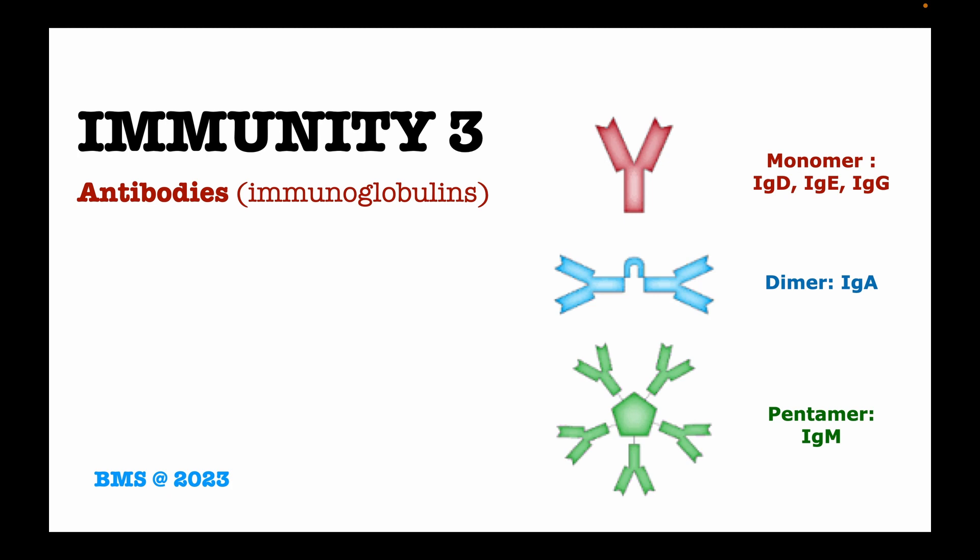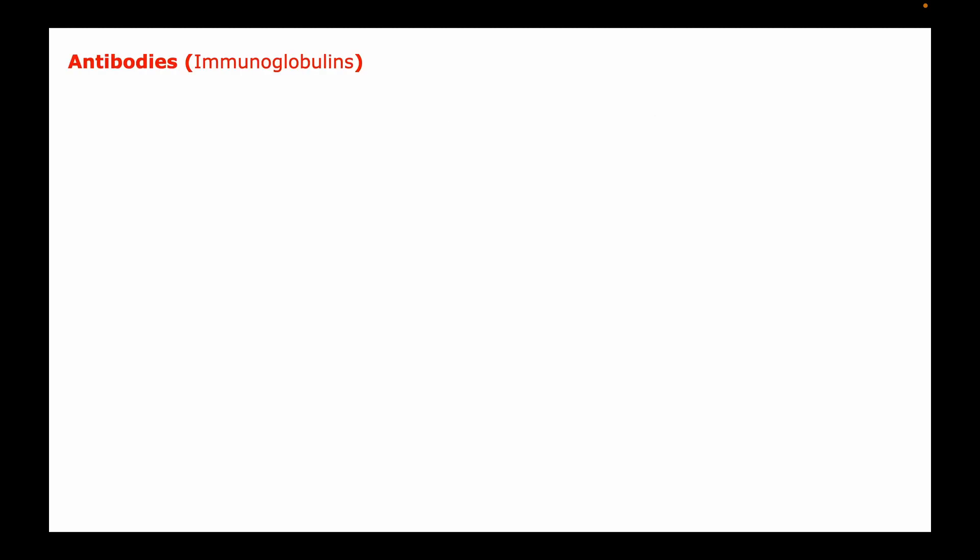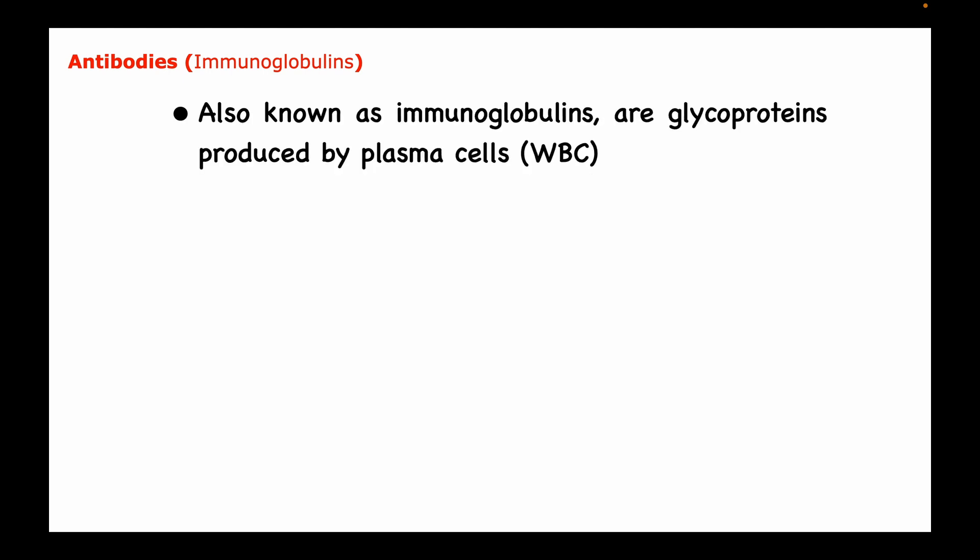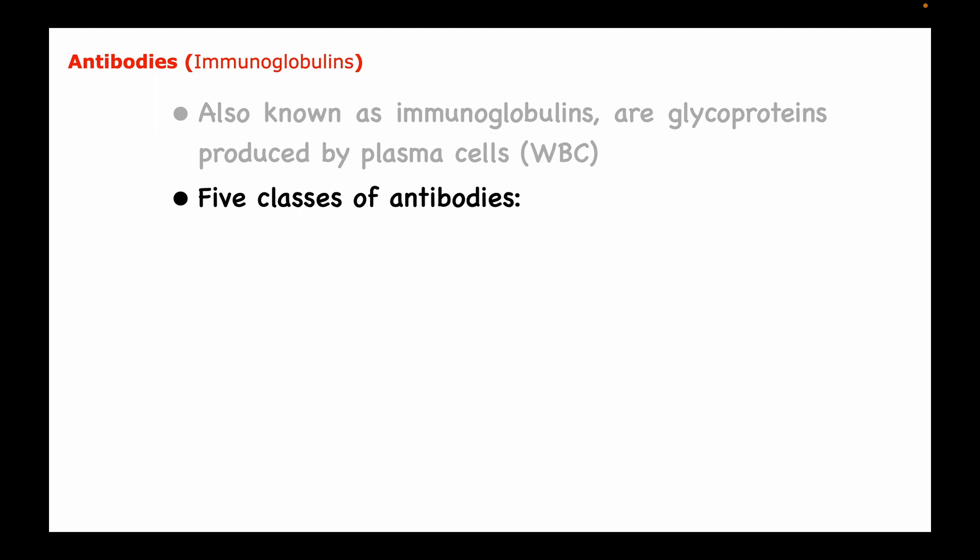Welcome. Today we are going to look at antibodies, also known as immunoglobulins. These are glycoproteins produced by the plasma cells of the white blood cells. Glyco comes from carbohydrates, and through the process of glycosylation, the carbohydrates are attached to the proteins to form the antibodies.